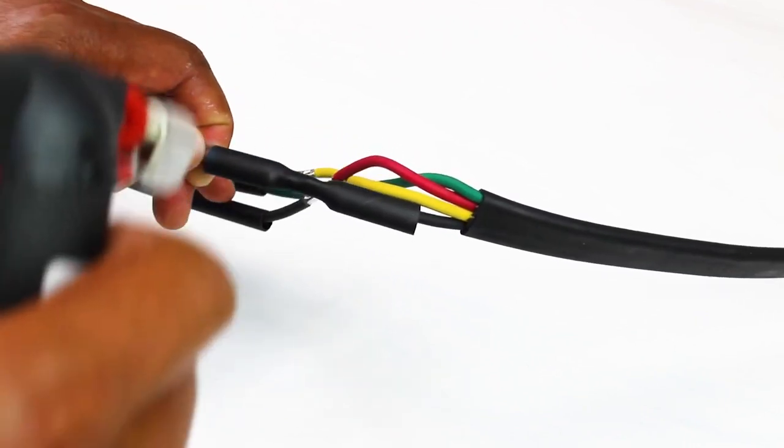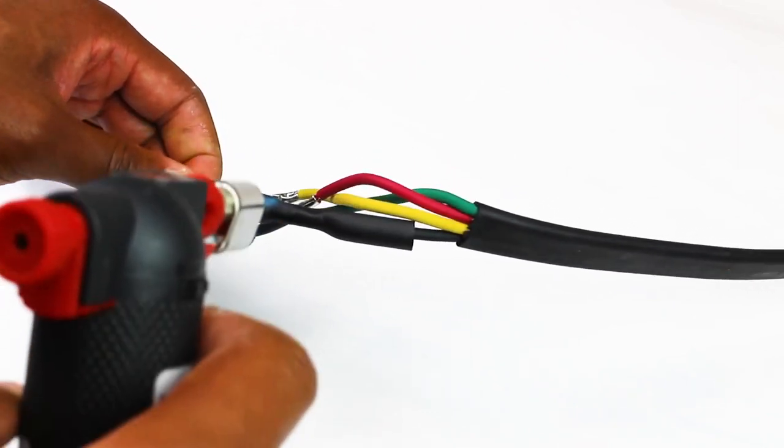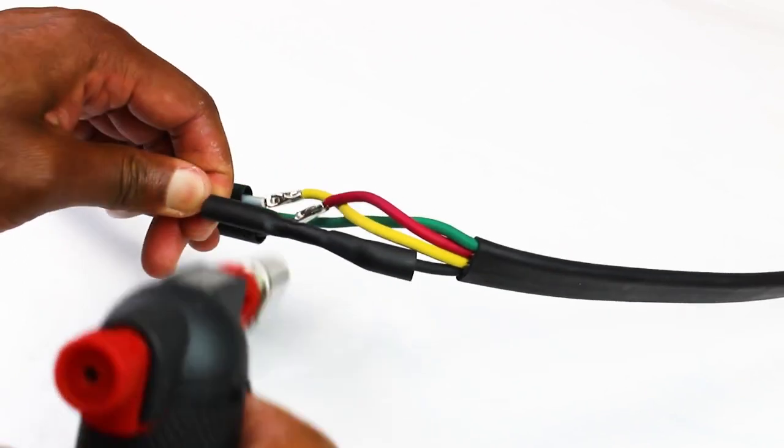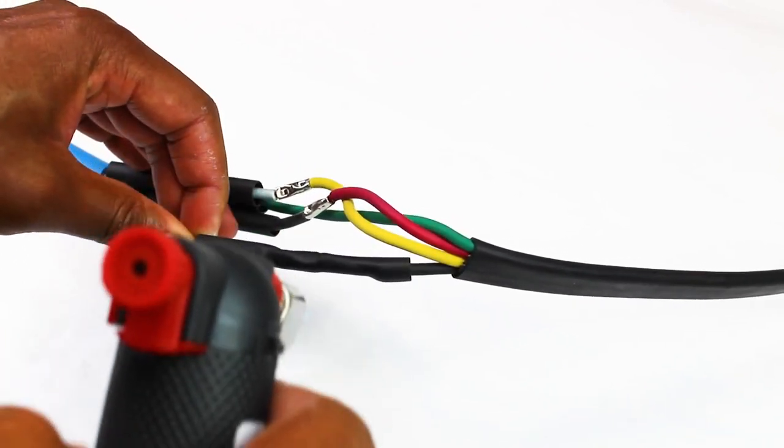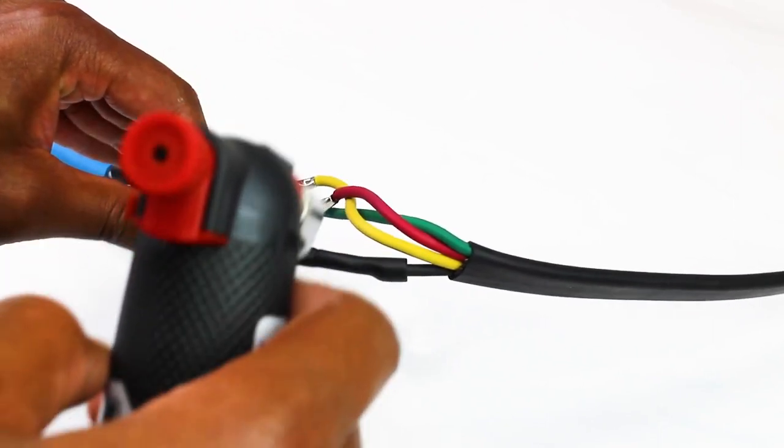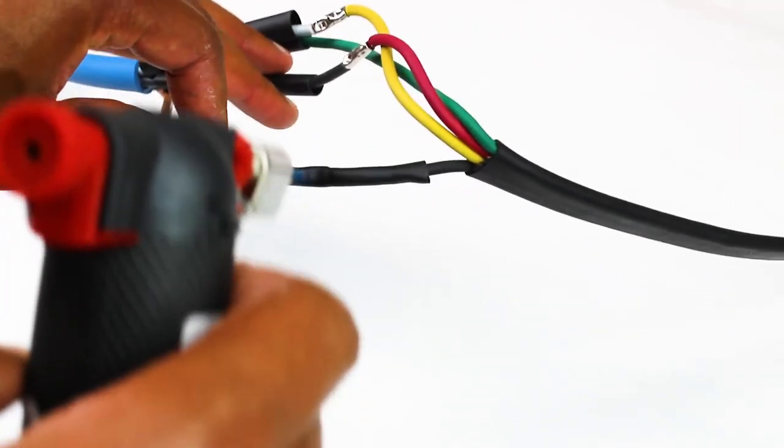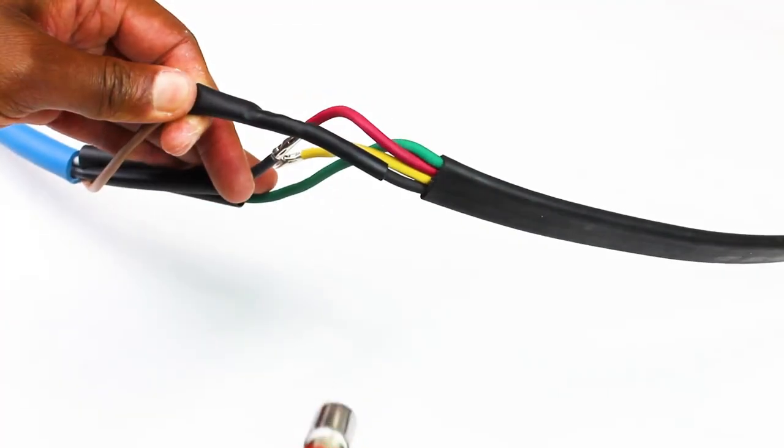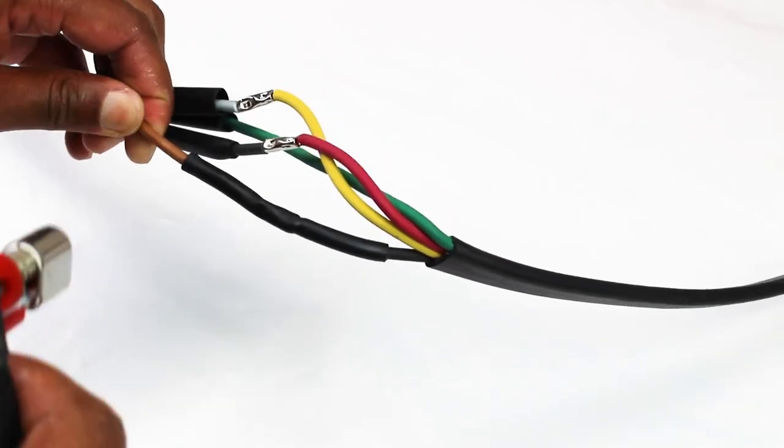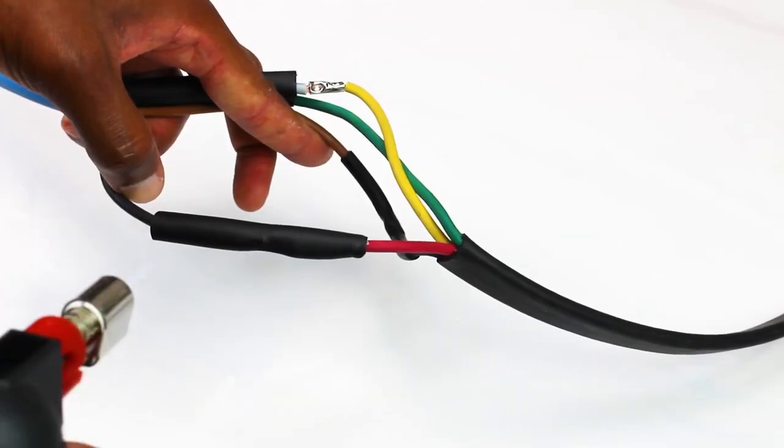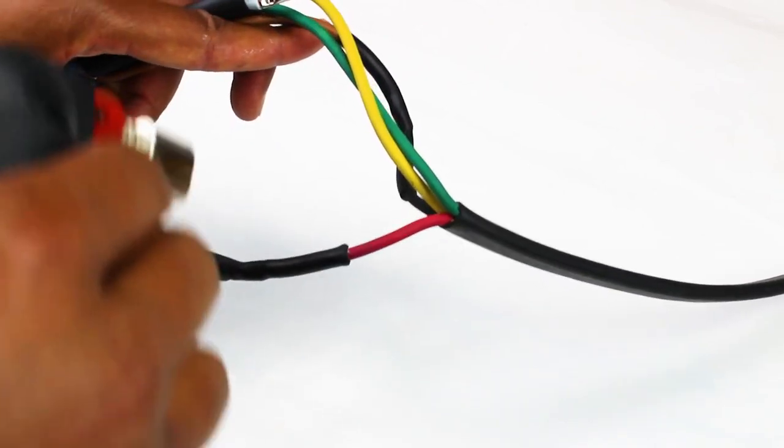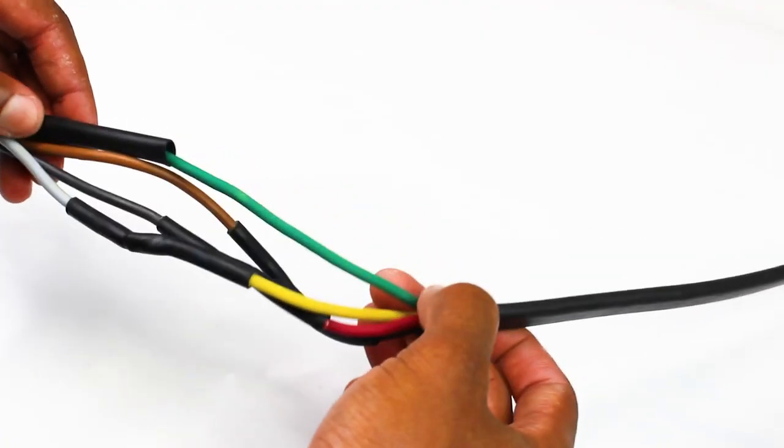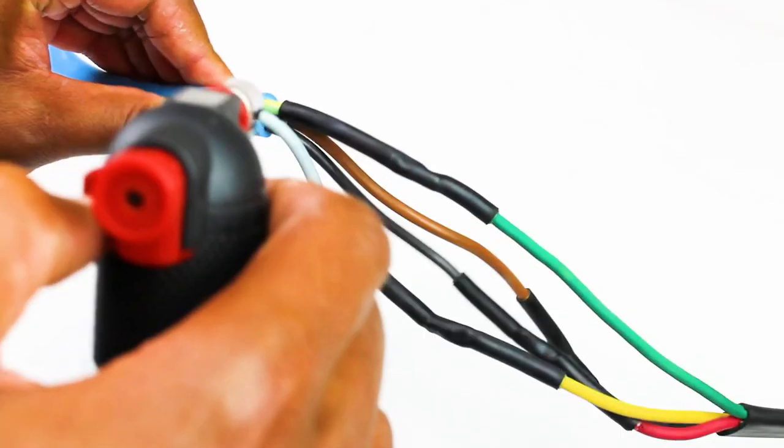For reliable bonding between the shrinking tubes and the wires, make sure the shrinking tubes are well heated over a couple of minutes.